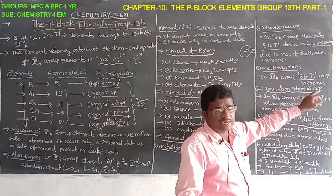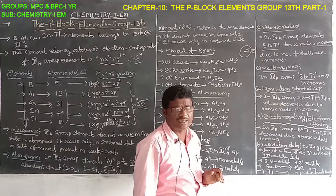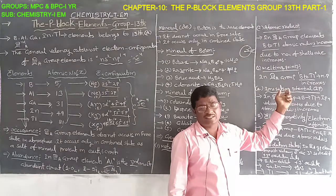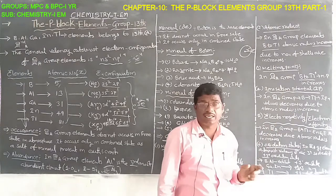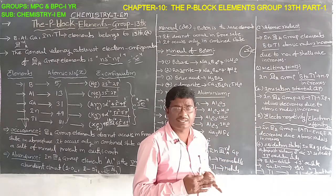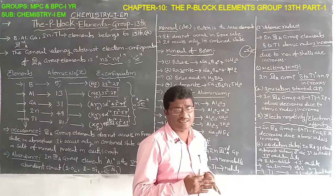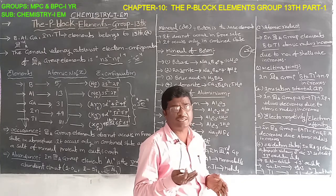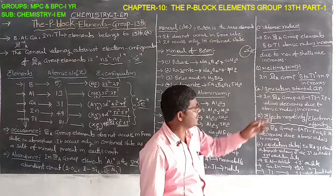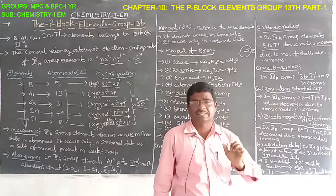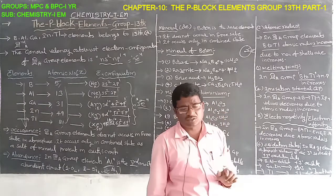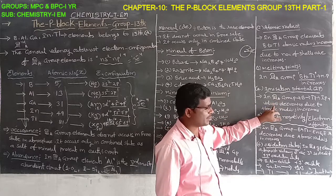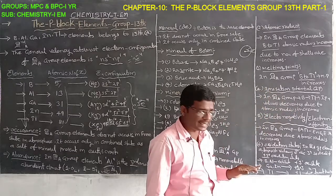Fourth property — ionization potential or ionization enthalpy. The minimum amount of energy required to remove an electron from the outermost shell of an isolated neutral gas atom is called ionization potential. In 13th group elements, from boron to thallium, ionization potential decreases because atomic radius increases.